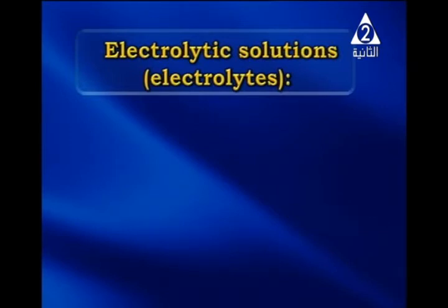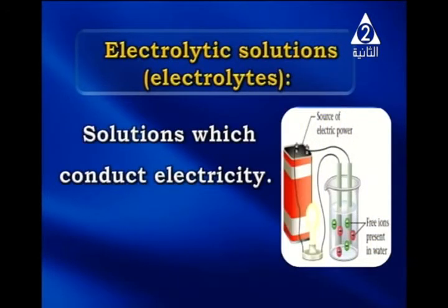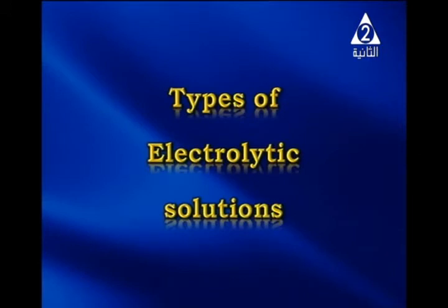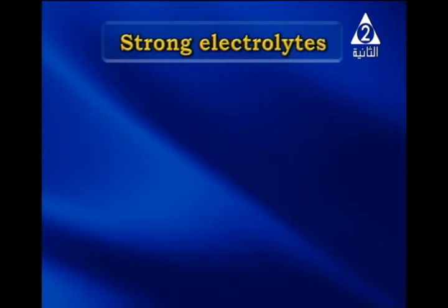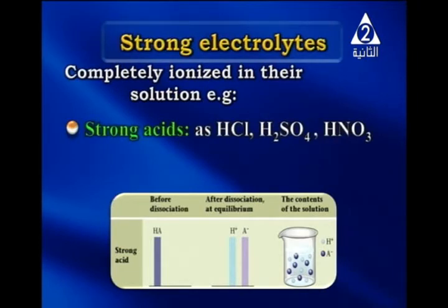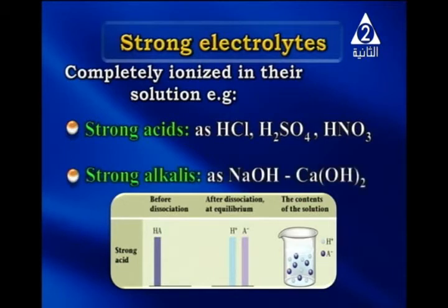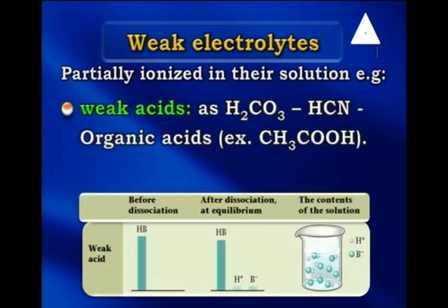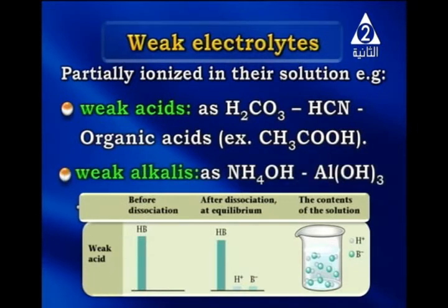The second type of solution according to conduction of electric current is the electrolytic solution, or electrolyte — a solution which conducts electricity because it contains positive and negative ions. We have two types: strong electrolytes, which are completely ionized in solution, like strong acids (hydrochloric acid, sulfuric acid, nitric acid) and strong alkalis (sodium hydroxide, calcium hydroxide); and weak electrolytes, which are partially ionized, like weak acids (carbonic acid, acetic acid) and weak alkalis (ammonium hydroxide, aluminum hydroxide).